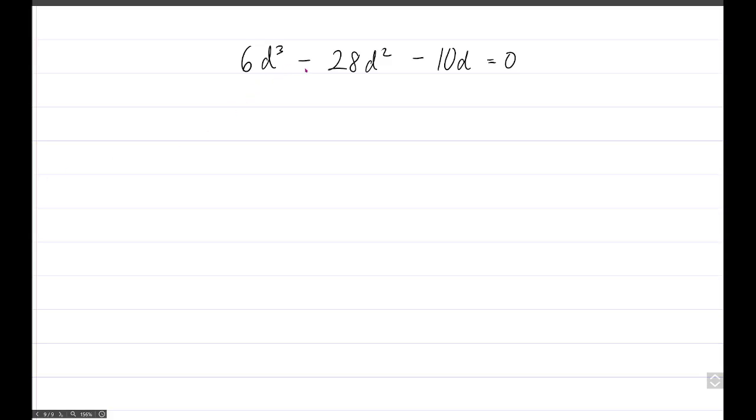Alright, let's look at 6d cubed minus 28d squared minus 10d equals 0. We already have that 0 on the right side of the equation, so we don't need to add or subtract on both sides.